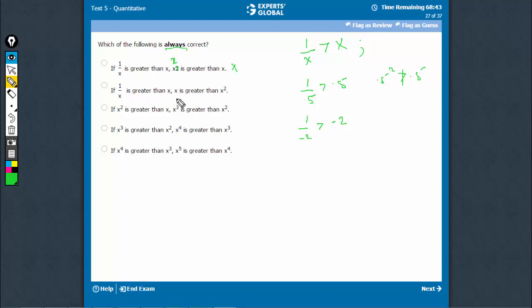If 1 upon x is greater than x, same thing. There are two possibilities, this and this. x is greater than x square. This is saying 0.5 is greater than, sorry, 0.5 square. Yeah, here this works but minus 2 is not greater than minus 2 square. Therefore, this doesn't work.